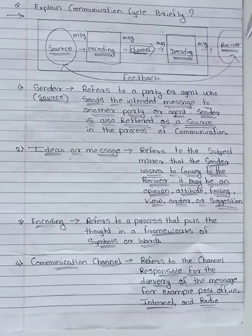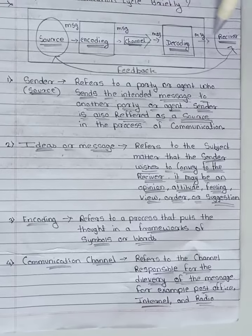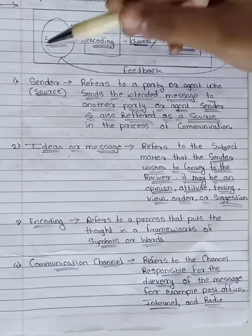So first of all we have this diagram: source, encoding, channel, decoding and receiver. So now we will see the information of this all.